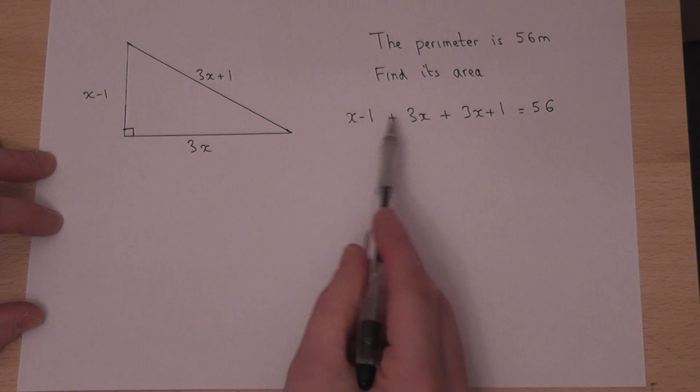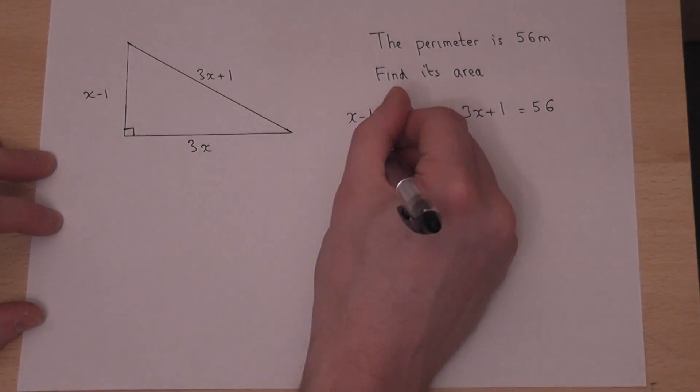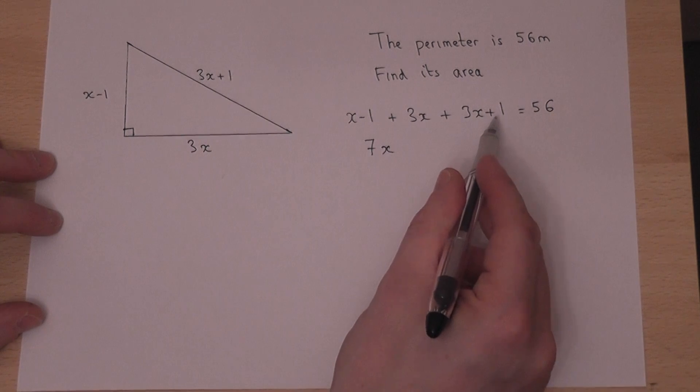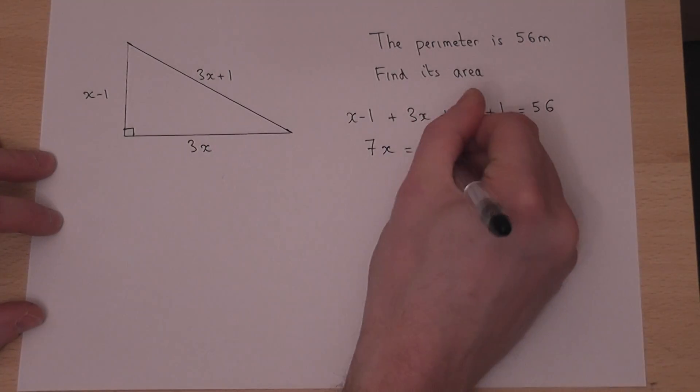If we make this simpler, x, 3x, 3x is 7x, minus 1 plus 1, they cancel out, so 7x equals 56.